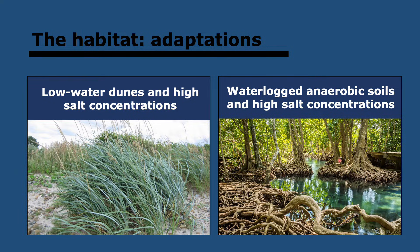Then we have mangrove trees. The challenges are that they live in waterlogged anaerobic soils with little air and high salt concentrations because seawater often floods them. They secrete excess salt from glands in the leaves. They have roots covered in cork which reduces salt permeability. They have cable roots which grow close to the soil surface where there's more oxygen, and vertical root branches that grow up into the air to absorb oxygen. They also have large floating seeds carried by the ocean, and accumulate minerals in their roots to increase osmotic potential and draw in more water.